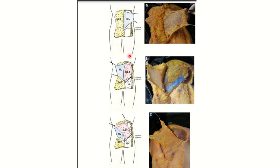In the dissection of the superficial fascia of the abdomen, this is the superficial adipose layer and this is the membranous layer. After removal of the membranous layer, this is the deep adipose layer. So this is the superficial adipose layer, this is the membranous layer, and this is the deep adipose layer.